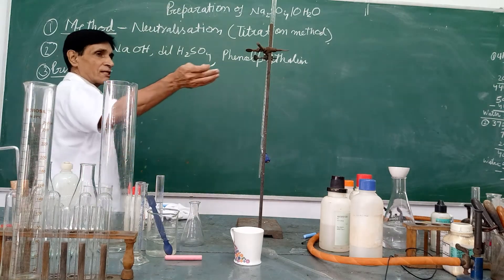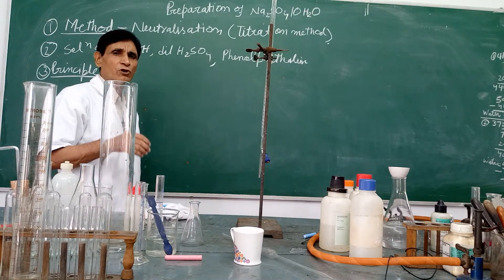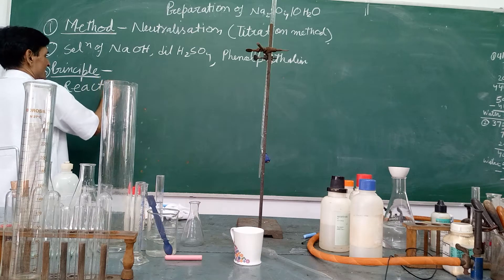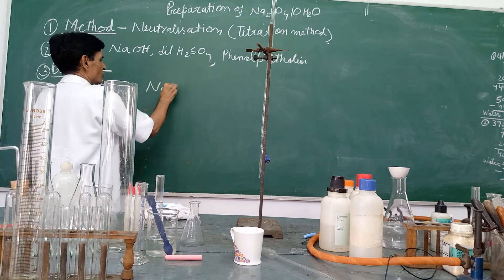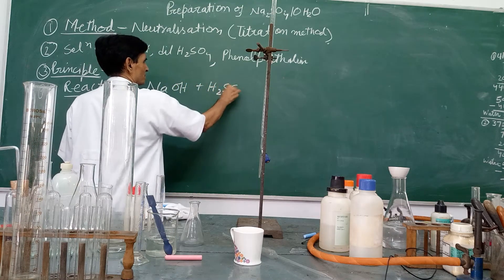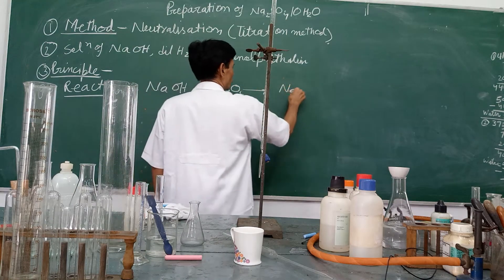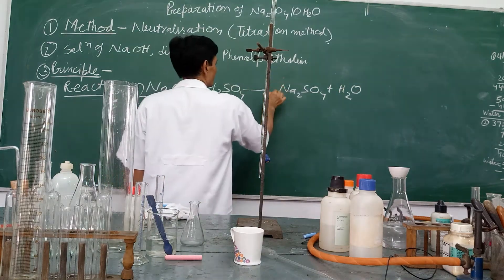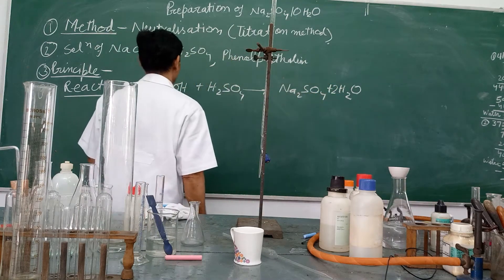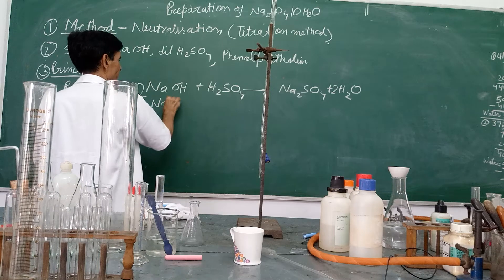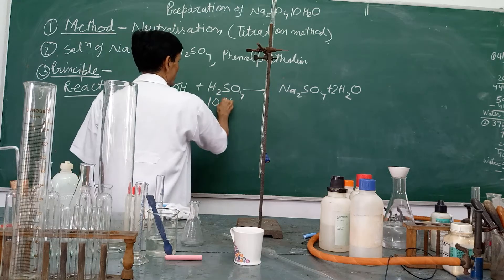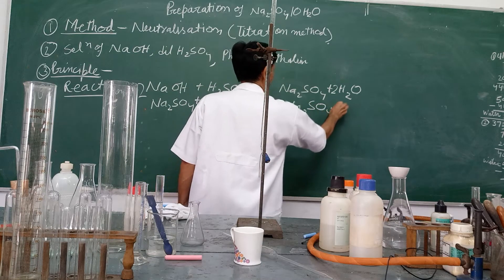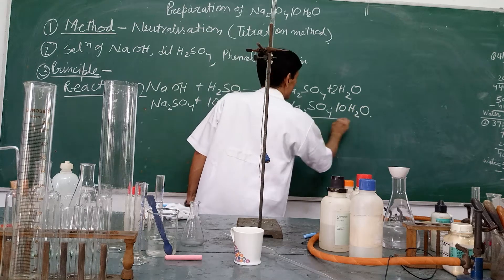Sulphuric acid reacts with sodium hydroxide solution to form sodium sulphate and water. The balanced reaction is: 2NaOH + H2SO4 → Na2SO4 + 2H2O. During crystallization, Na2SO4 combines with 10 molecules of water to form sodium sulphate decahydrate crystal, which is our aim to prepare.